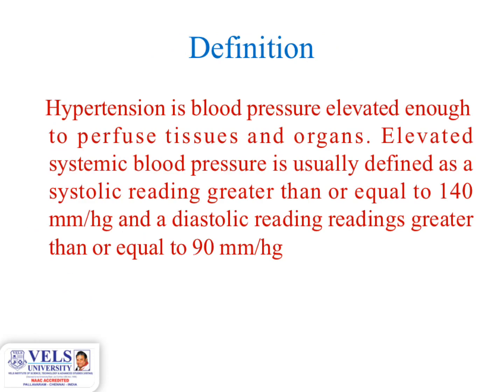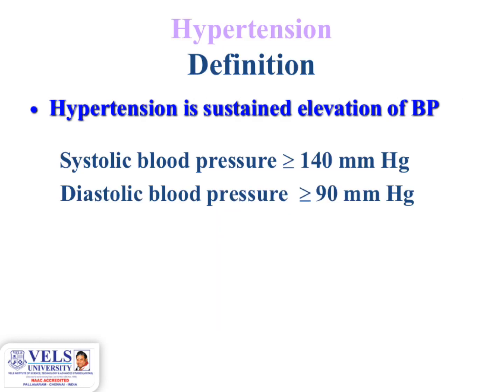Coming to the definition of hypertension: hypertension is blood pressure elevated beyond what is needed to perfuse tissues and organs. Elevated systemic blood pressure is usually defined as a systolic reading greater than or equal to 140 mmHg and a diastolic reading greater than or equal to 90 mmHg. Hypertension is the sustained elevation of BP.